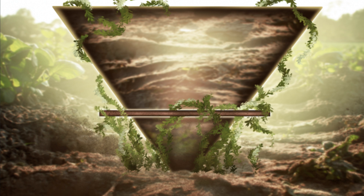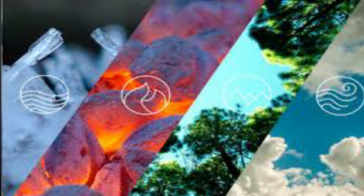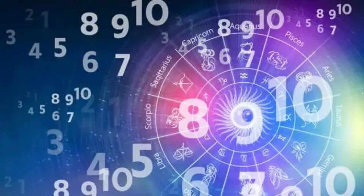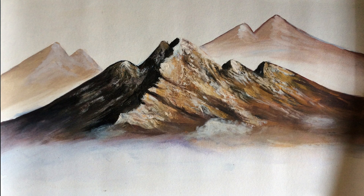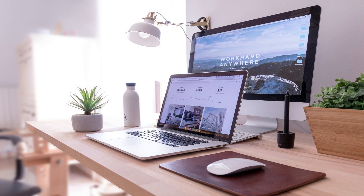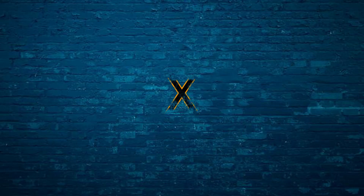If you don't have the Earth element in your chart, one remedy is the South West direction. In the South West area, without water, you can put a rock statue, a heavy structure, or a heavy scenery. But don't put yellow color there.